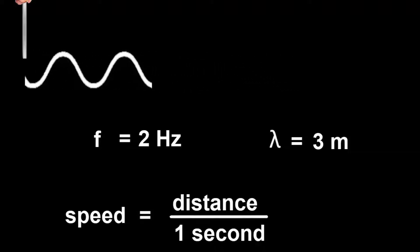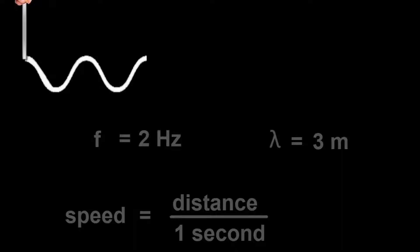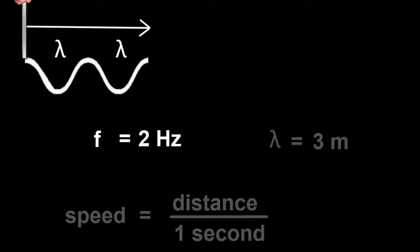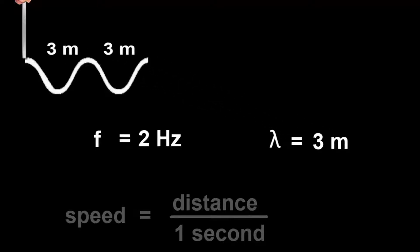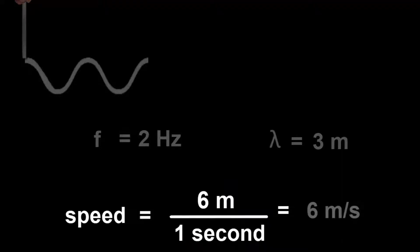How many wavelengths will it travel in a second? The wave moved two wavelengths in one second. That makes sense because two hertz means two waves per second, so the wave must have moved ahead by two wavelengths. Each wavelength is three meters long, so it travels six meters altogether. The speed must be six meters divided by one second, or six meters per second.